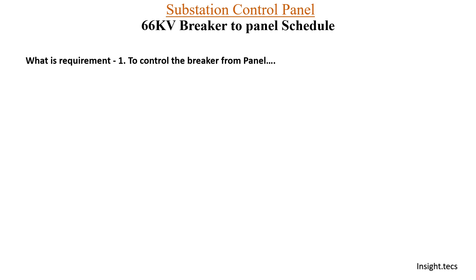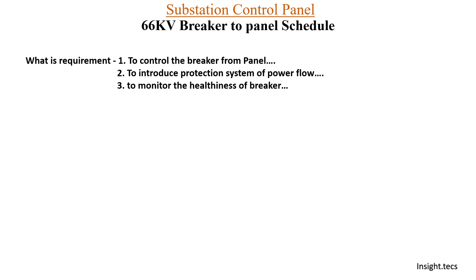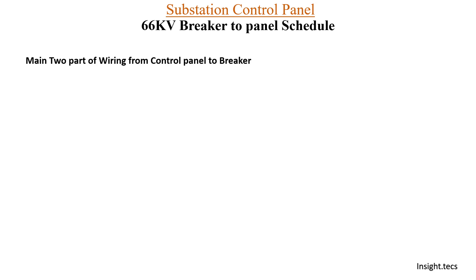The first reason to prepare a schedule is to control the breaker from the control panel. Second, to introduce the protection system of the power flow so that in case of emergency you can turn on or turn off the breakers easily from the panel. Third is to monitor the healthiness of the breaker — the indication part — where the breaker indicates various things about its condition. There are two main parts: control of the breaker and indication of the breaker.